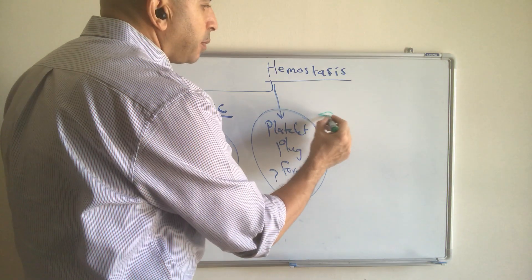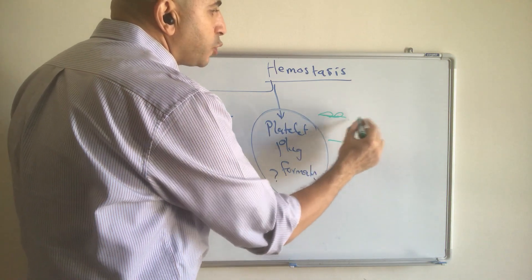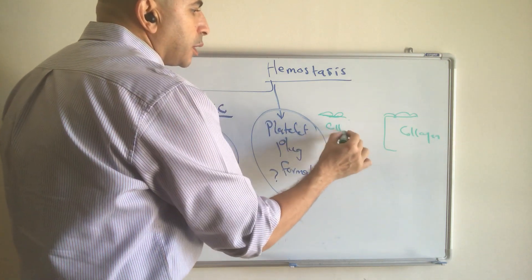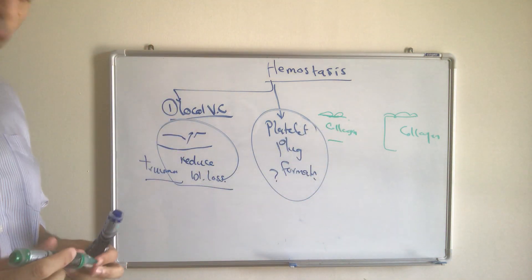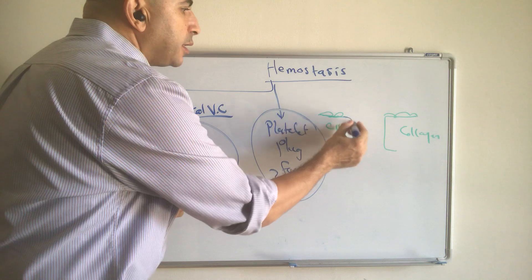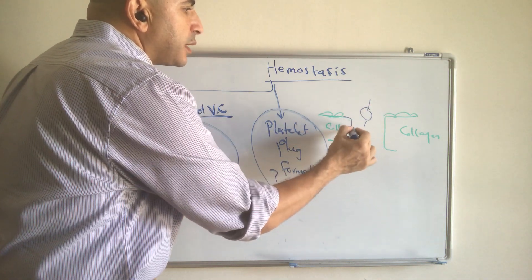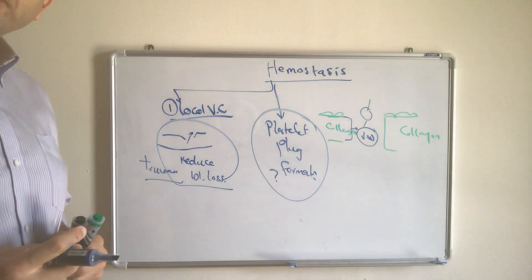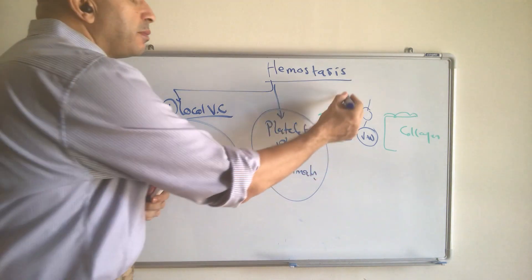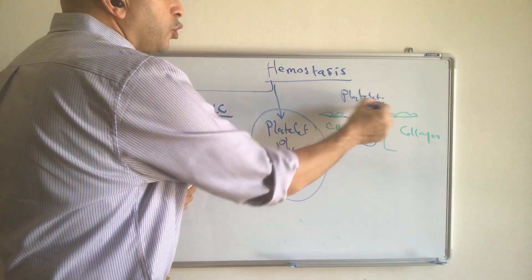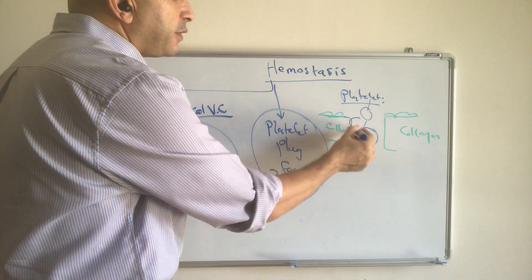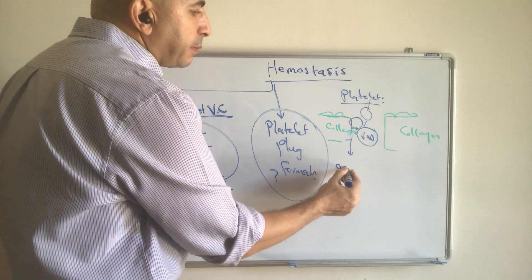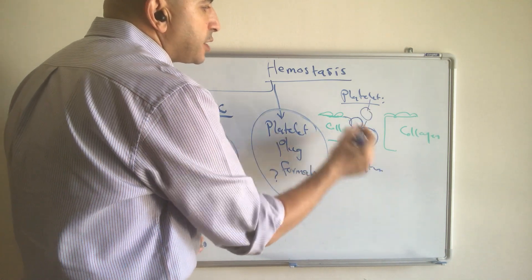Below the endothelium of the blood vessel, there is subendothelial collagen. Platelets come and interact with this subendothelial collagen in the presence of von Willebrand factor. Von Willebrand factor adheres the platelet to the subendothelial collagen. Once attached, the platelet proceeds to the next step: platelet activation. So the first step is platelet adhesion.